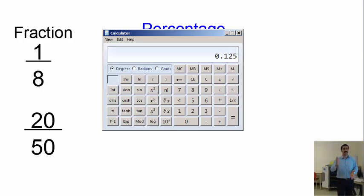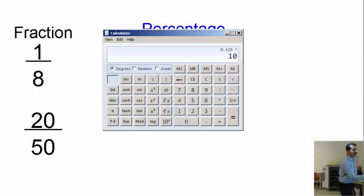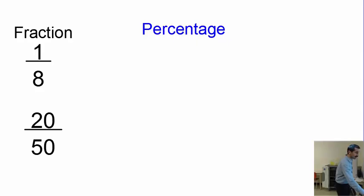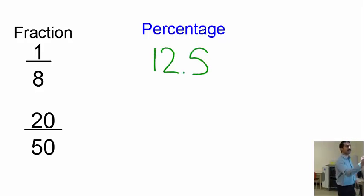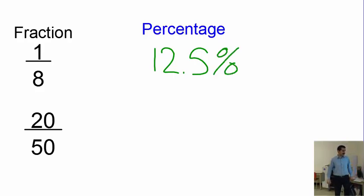Whatever the decimal is, if you want to make it a percentage, just multiply it by 100. So 0.125 times 100 equals 12.5 — so the answer is 12.5%. How about the fraction 20 over 50? It's asking us to make it a percentage.